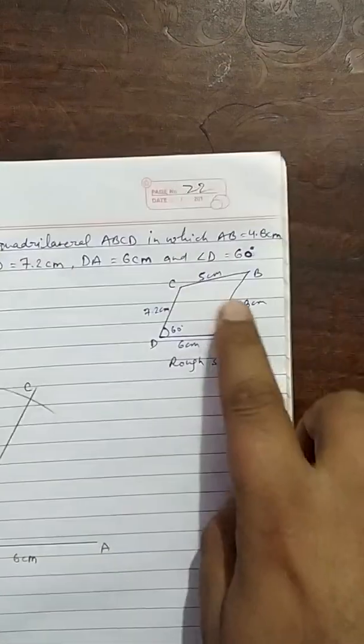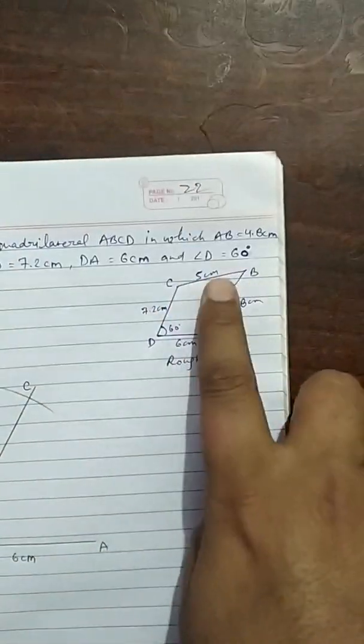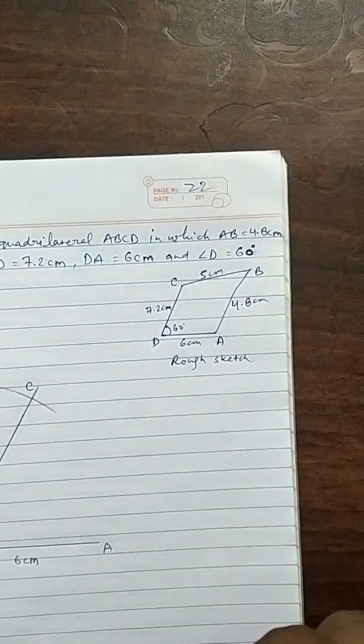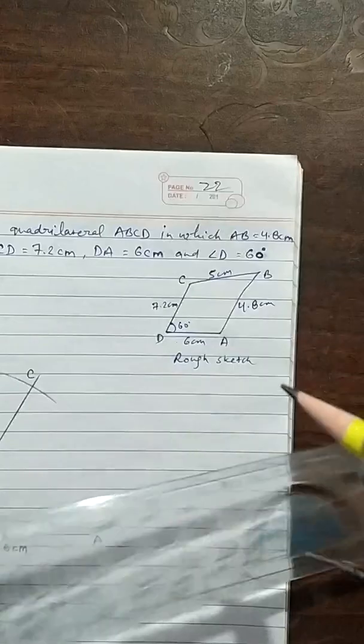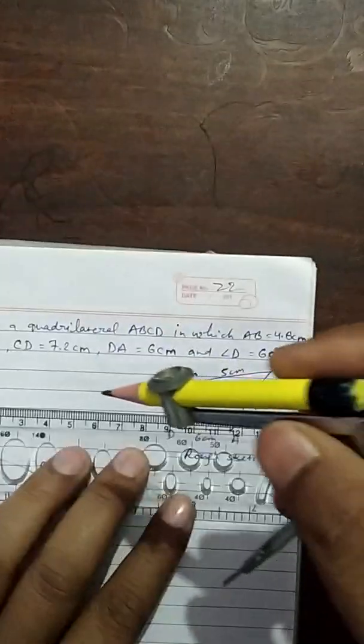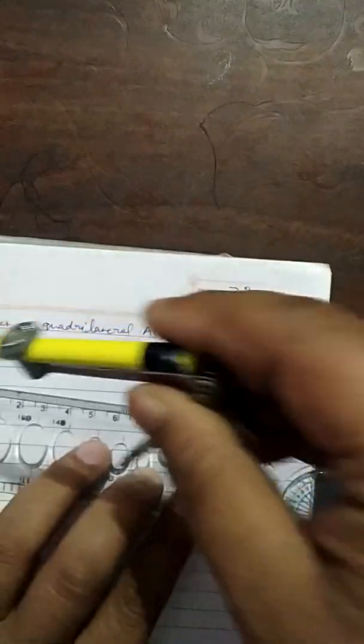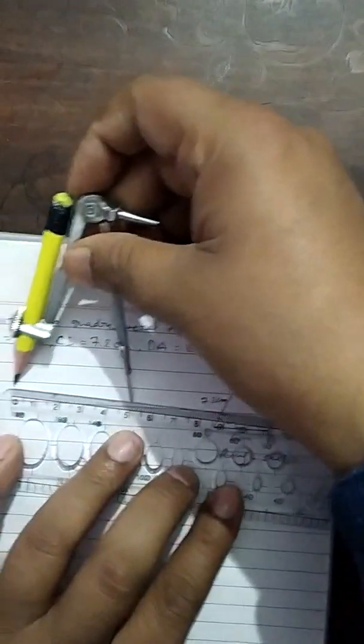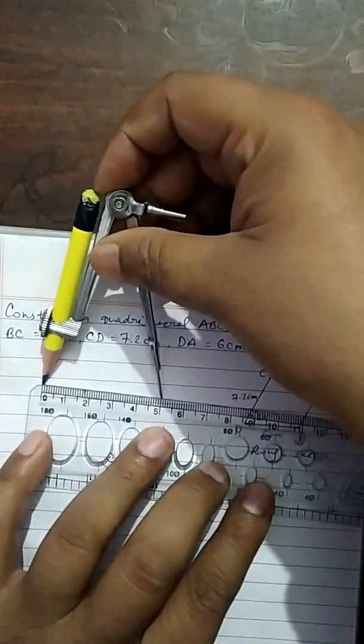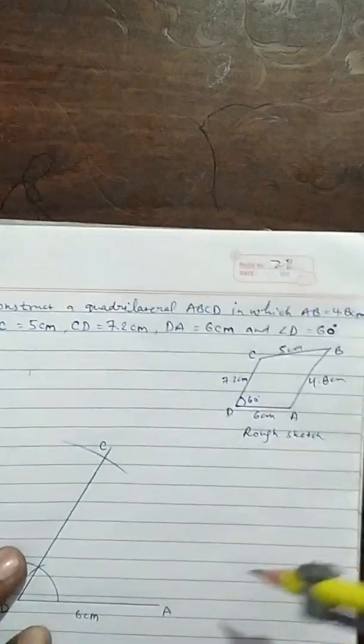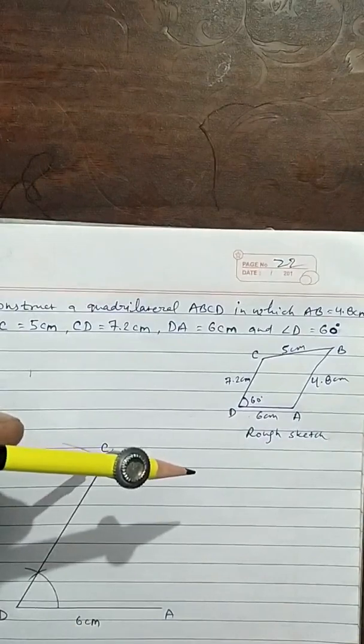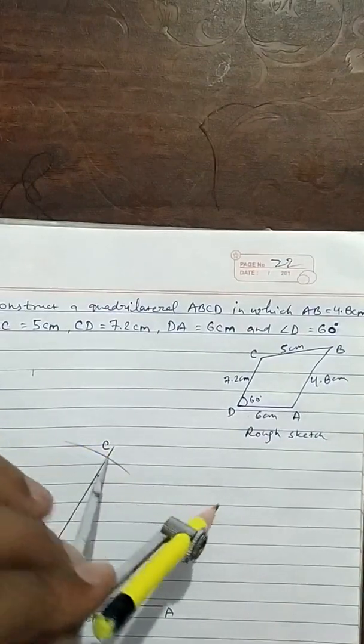Now, from C to B, you have to mark 5cm. This is 5cm opening from 0, like this.